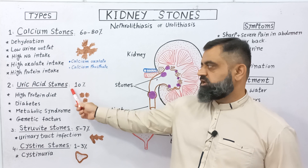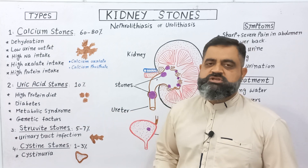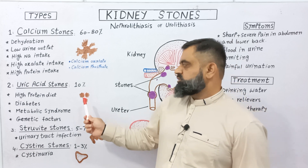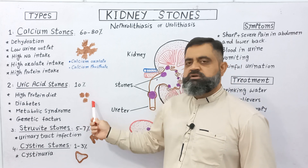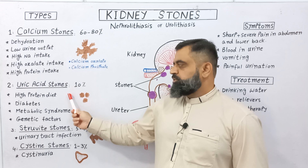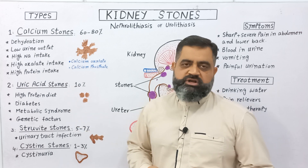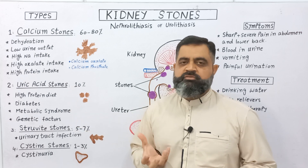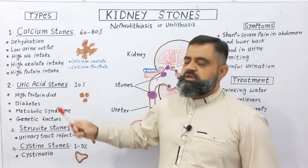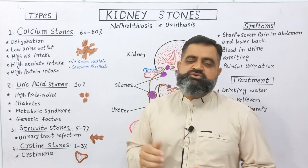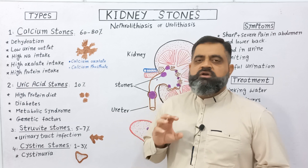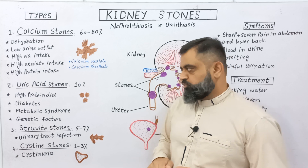The second type of stones are uric acid stones, which usually contribute 10 percent of all stones. These stones are usually round in shape. They are produced as a result of a high protein diet which includes red meat and pulses. Fifth, obesity, which can lead to type 2 diabetes, and type 2 diabetes can lead to the formation of stones inside the body.